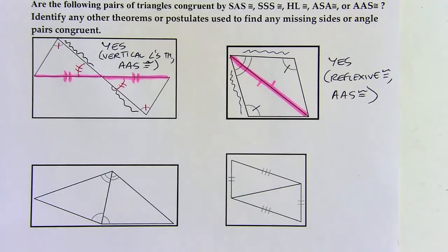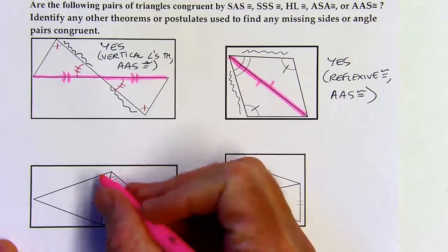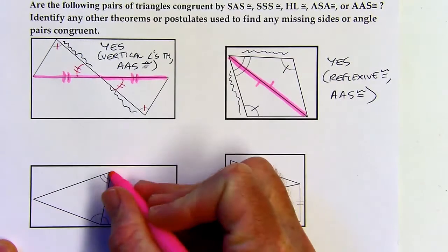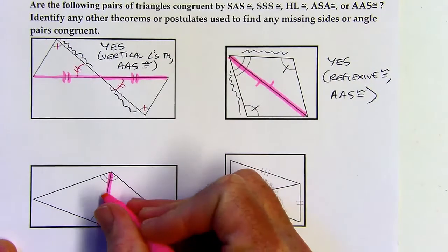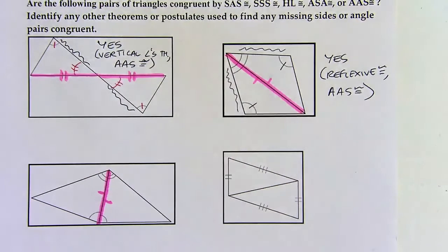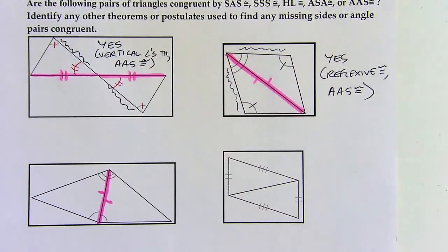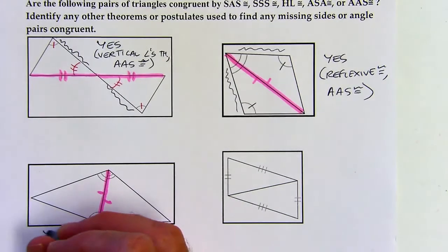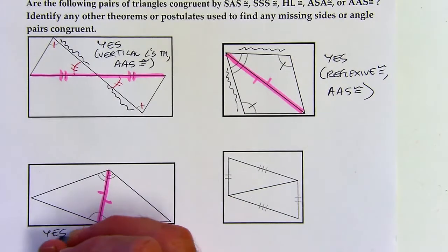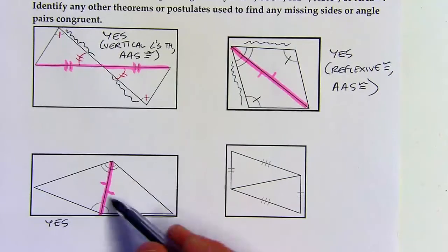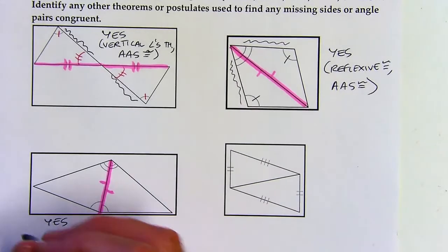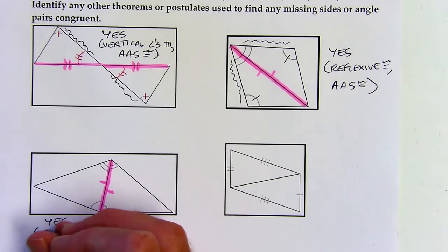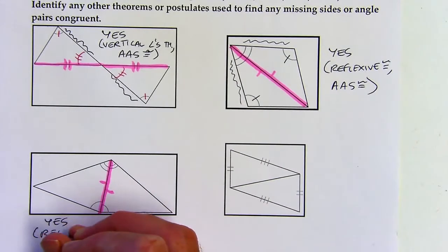Kind of the same as the last one — we can use the reflexive property again to get this segment as congruent to itself. Now we've got two angles and a side. This is going to be ASA because this side is in between the two marked angles. So I used reflexive and then ASA.